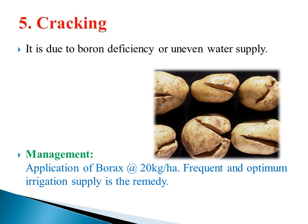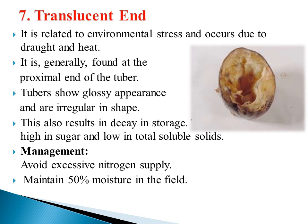The seventh disorder is translucent end. It is related to environmental stress and occurs due to drought and heat. It is generally found at the proximal end of the tubers. Affected tubers show a glossy appearance, are irregular in shape, result in decay during storage, and are high in sugar but low in total soluble solids. Management is to maintain 50 percent moisture in the field to reduce drought and heat problems, and avoid excessive nitrogen supply.